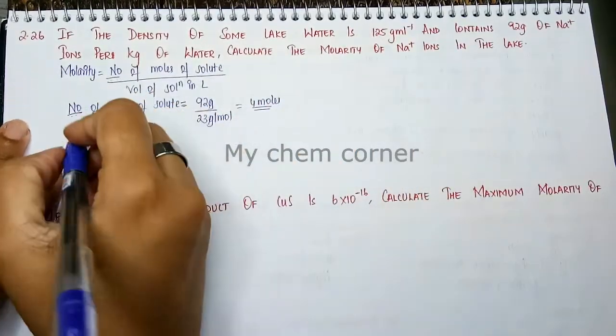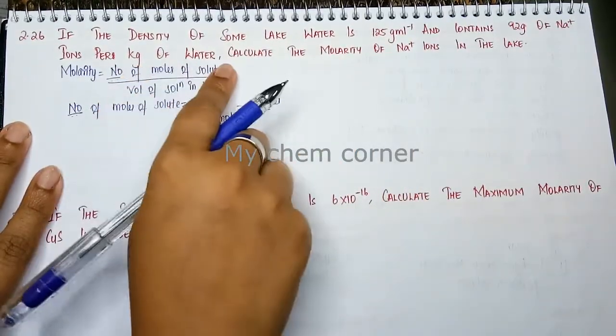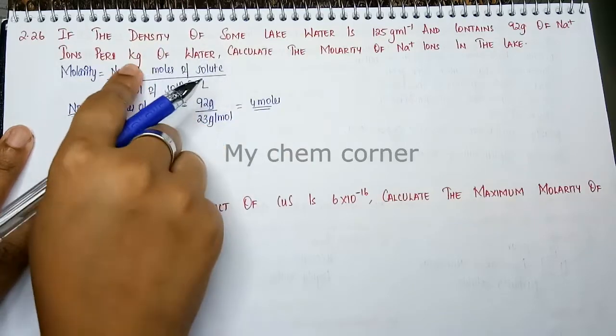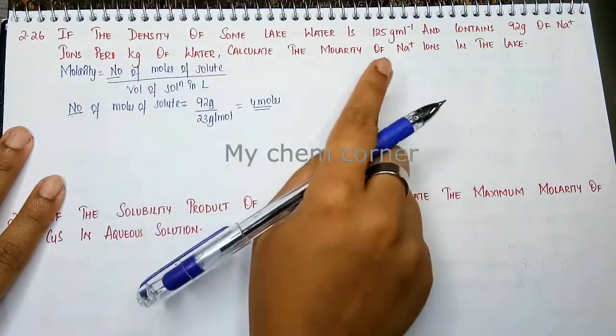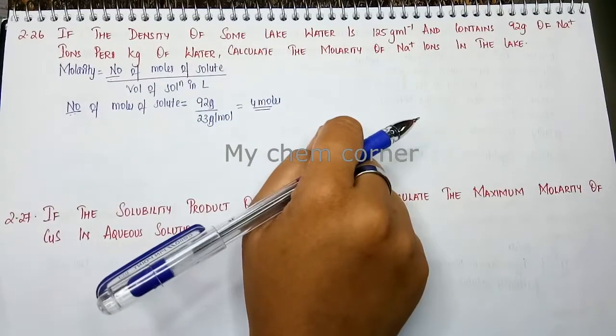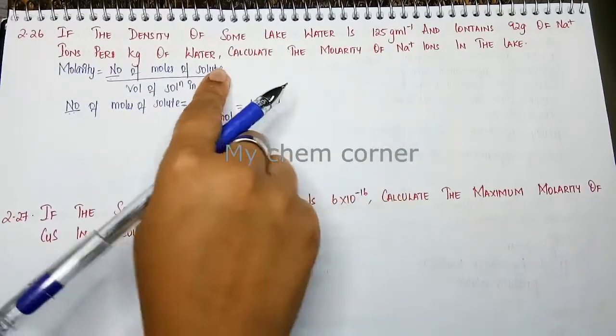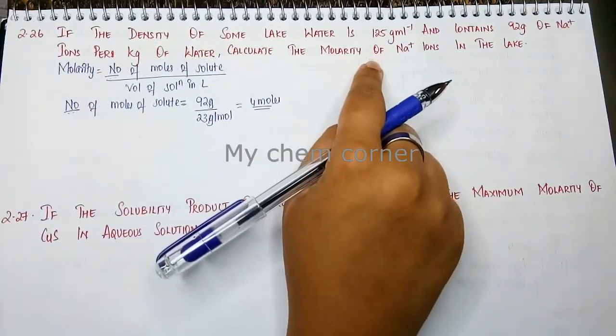Now volume of solution in liters. Volume is not given but mass is given - per kilogram is 1 kilogram which means 1000 grams. But that is of water. But here density of the solution is given.